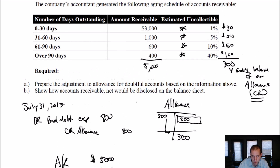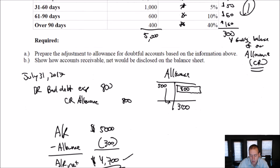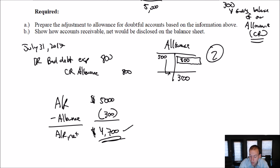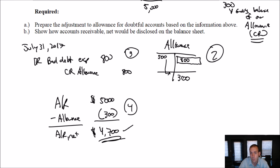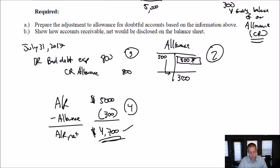To break this into steps: Step one, take a percentage of our aging accounts receivable to figure out how much is going to go uncollectible — that's the estimate of our ending allowance balance. Step two, prepare a T-account for the allowance to find the missing number. Step three, the journal entry. Step four, compute net AR. Comparing to the percentage of sales method, steps two and three are swapped: with percentage of sales you do the journal entry then update the T-account; here you update the T-account first to find the plug number, then use that to inform the journal entry.